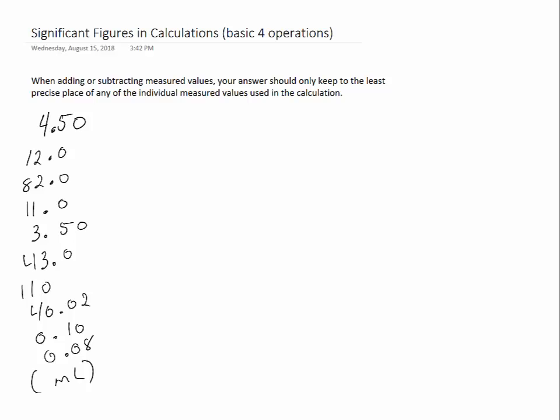Looking at all of the values from the video on determining significant figures and measurements — these are all of the values on the left. Let's say that all of these are in milliliters, so we're measuring volumes. Looking at all those values, which one — and there is only one — is the least precise measurement?